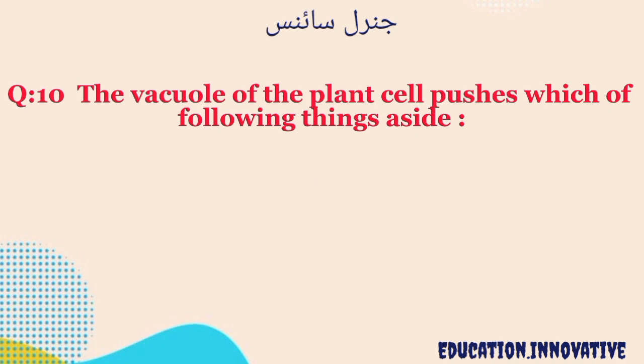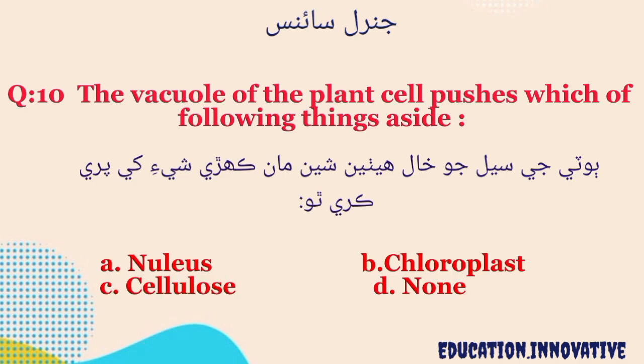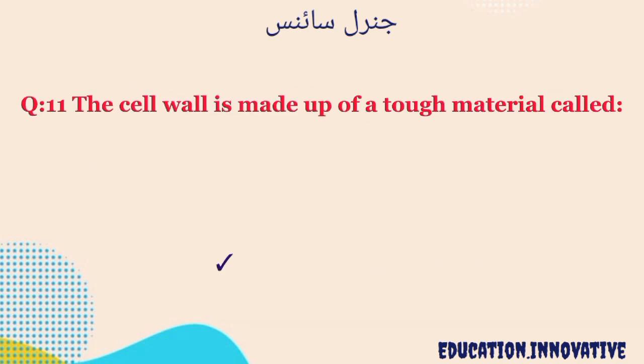Question number 10. The vacuole of the plant cell pushes which of the following things aside? The correct answer is cellulose.